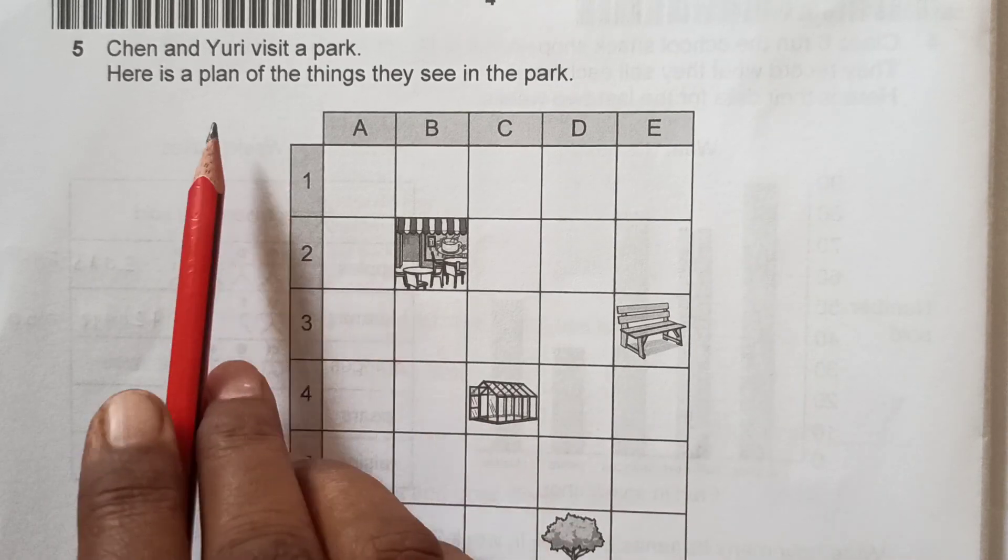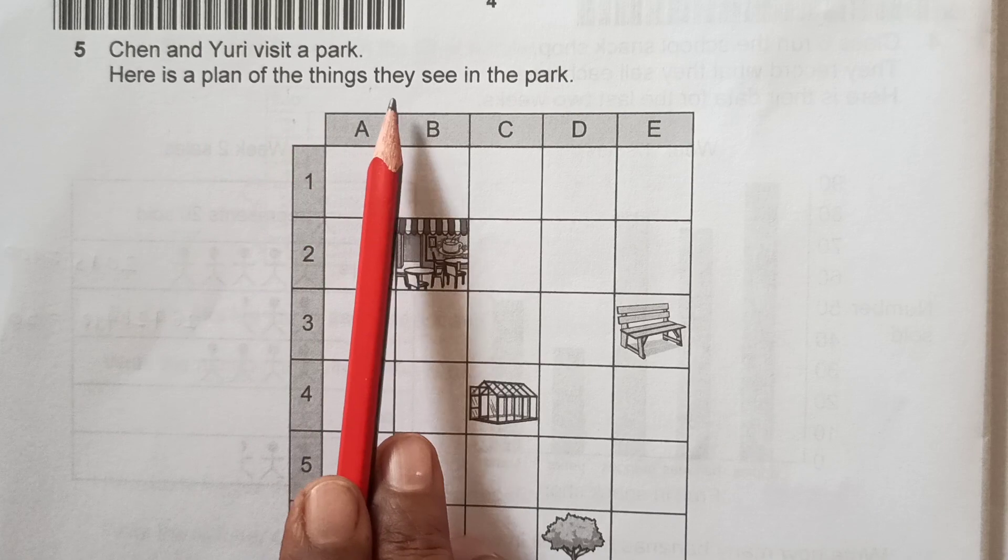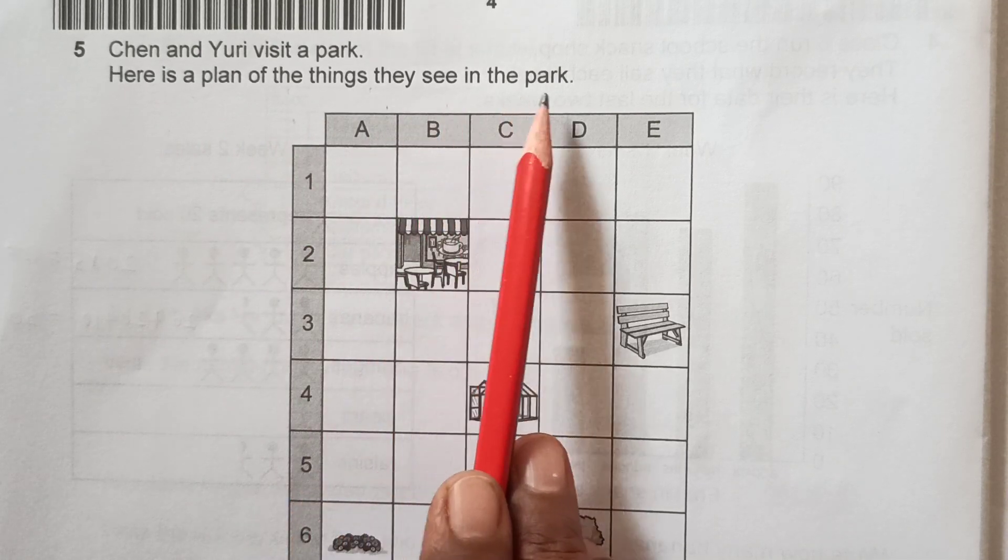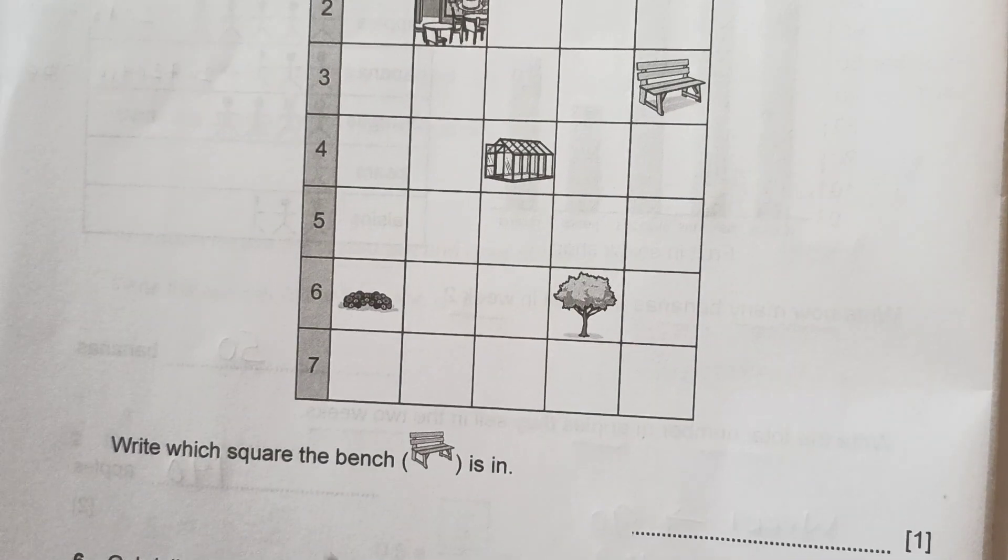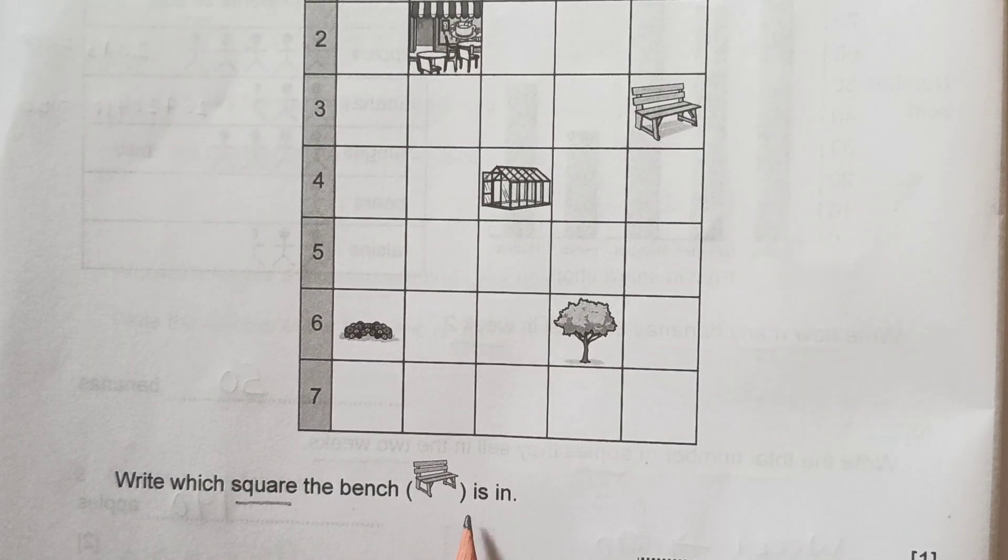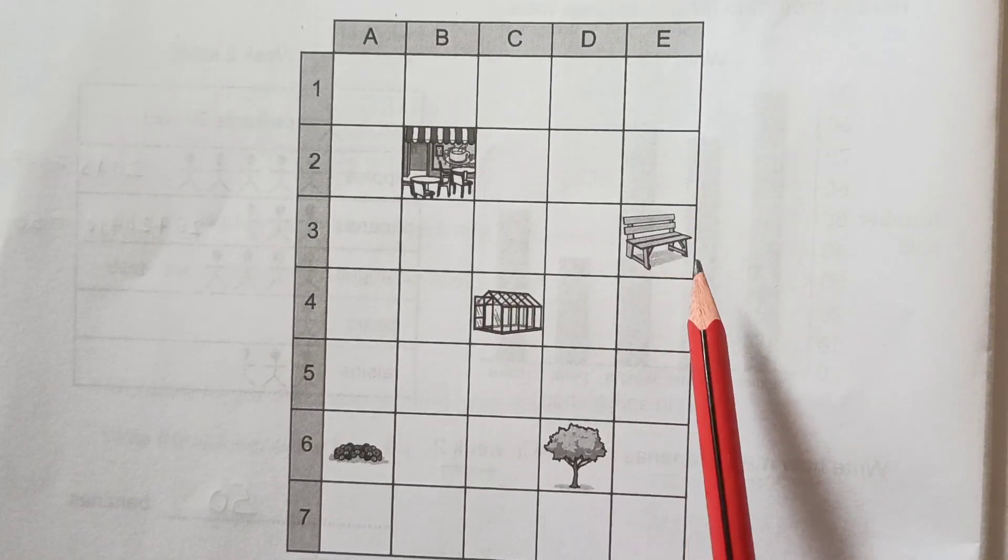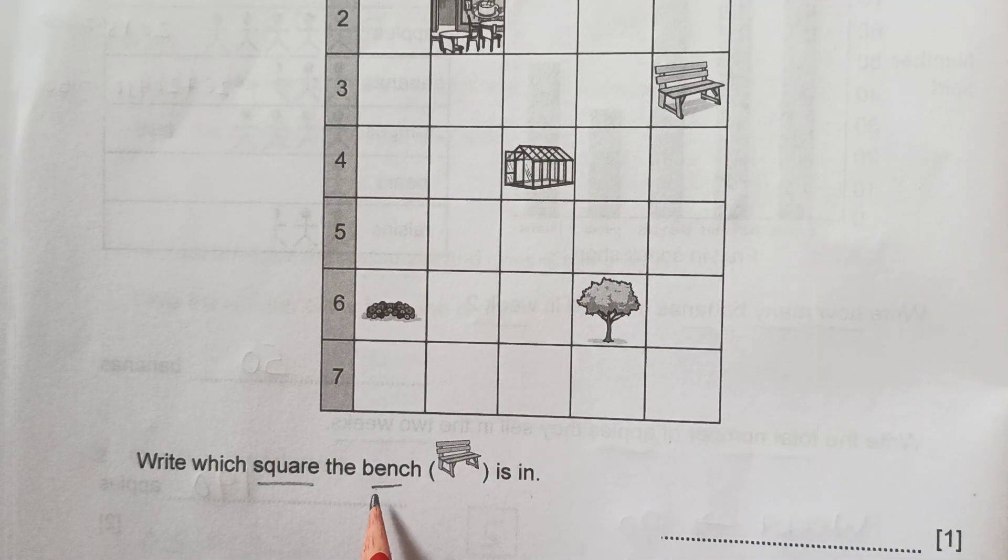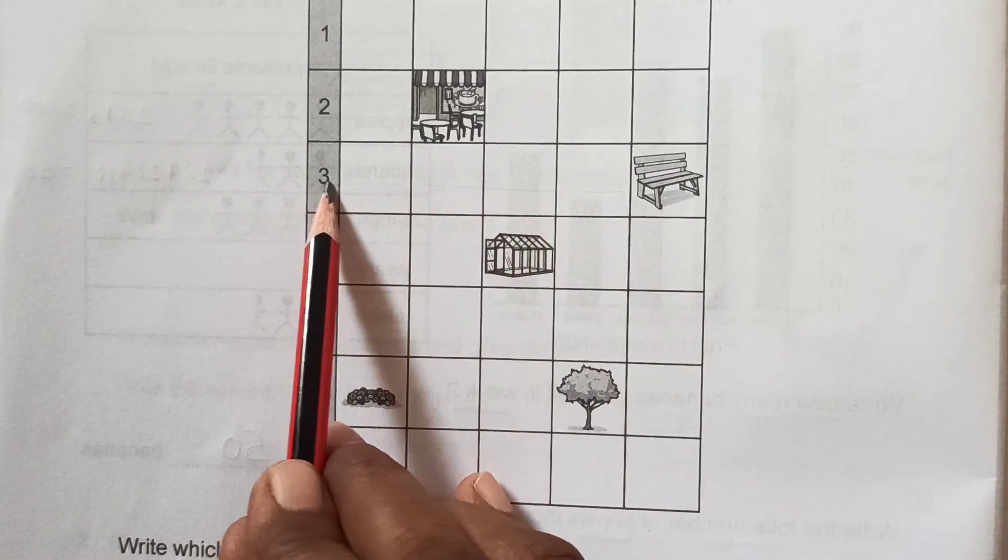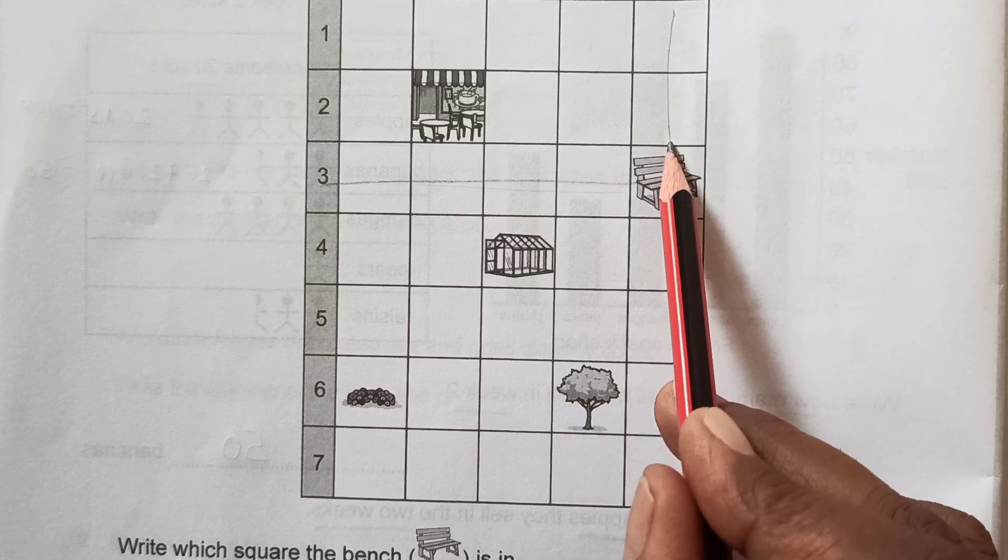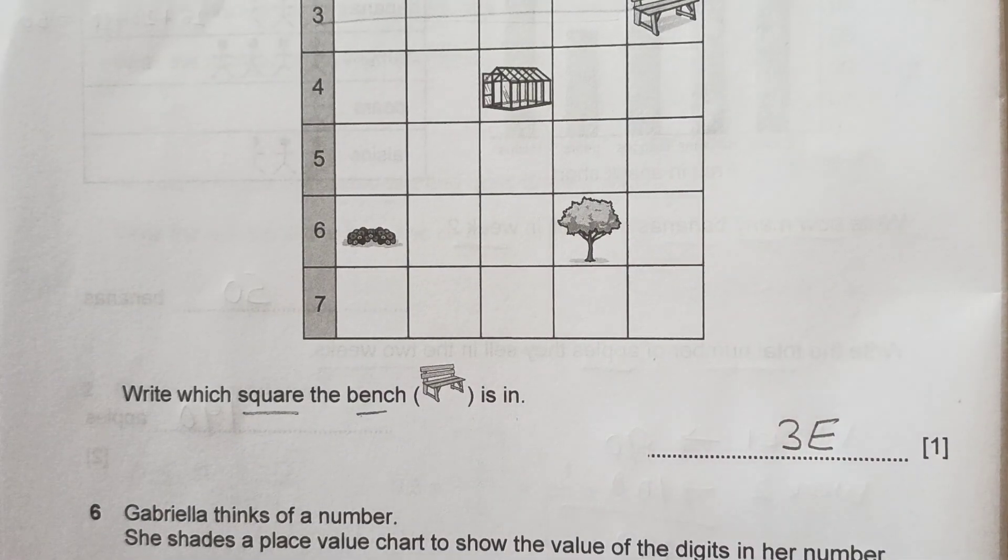Question number 5: Chen and Yuri visit a park. Here is a plan of things they see in the park. We have A, B, C, D here and we have numbers here on this side. Write which square the bench is in. Bench is here. Where is bench? Bench is here at 3. You see, the 3, and from this side is E. The answer is going to be 3E, simple.